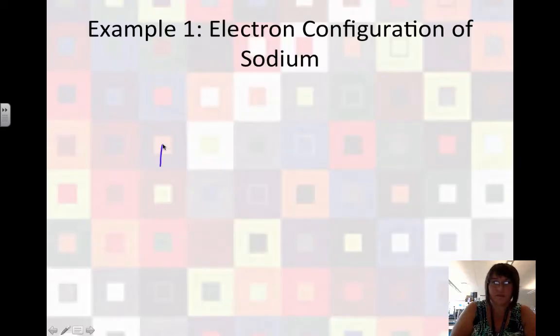So the electron configuration for sodium is 1s2, 2s2, 2p6, 3s1.